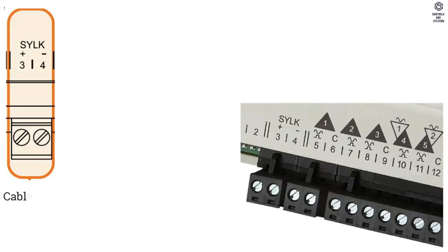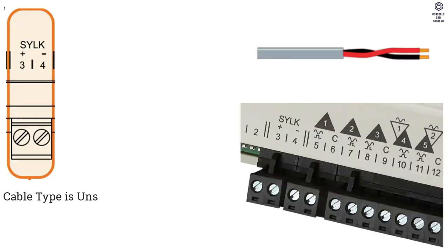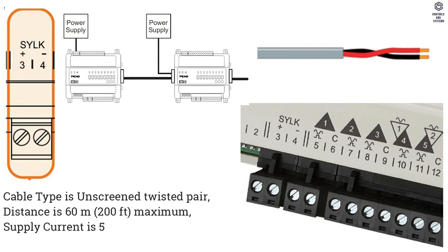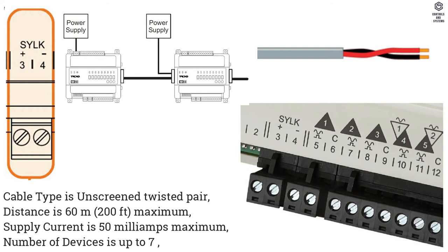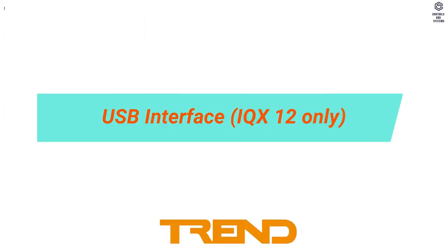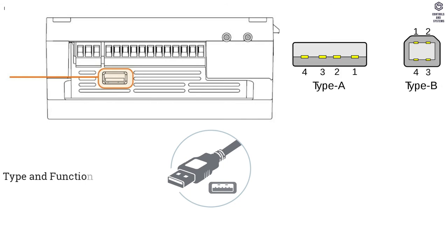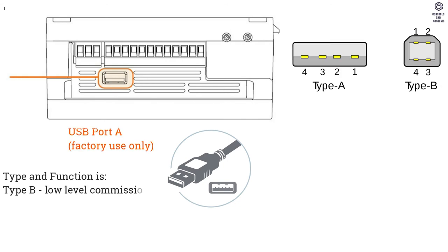Silk Bus: Cable type is unscreened twisted pair. Distance is 60 meters (200 feet) maximum. Supply current is 50 mA maximum. Number of devices is up to 7. USB Interface: Type B for low-level commissioning, Type A for factory use only.